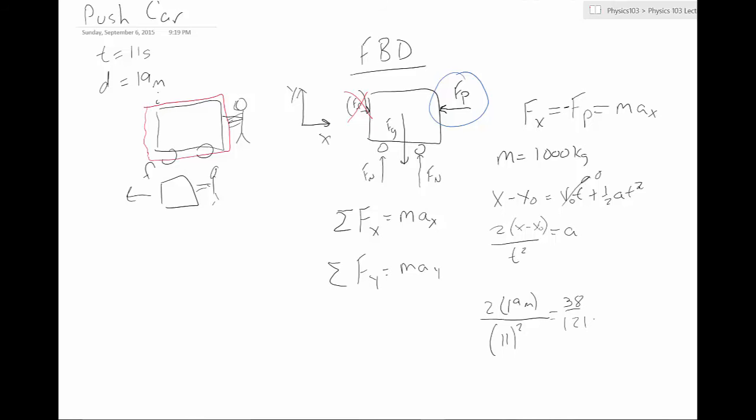So our acceleration, that looks like, if we multiply that by three, that's almost three exactly. So it's approximately equal to three meters per second squared. So we get about three meters per second squared as our acceleration.